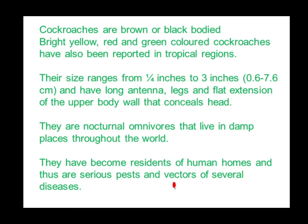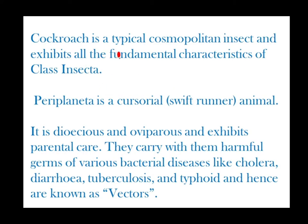They act as vectors — they spread some bacterial diseases. Cockroach is a typical cosmopolitan insect and exhibits all the fundamental characteristics of class Insecta. It can spread throughout our area. Periplaneta is a cursorial or swift runner animal.